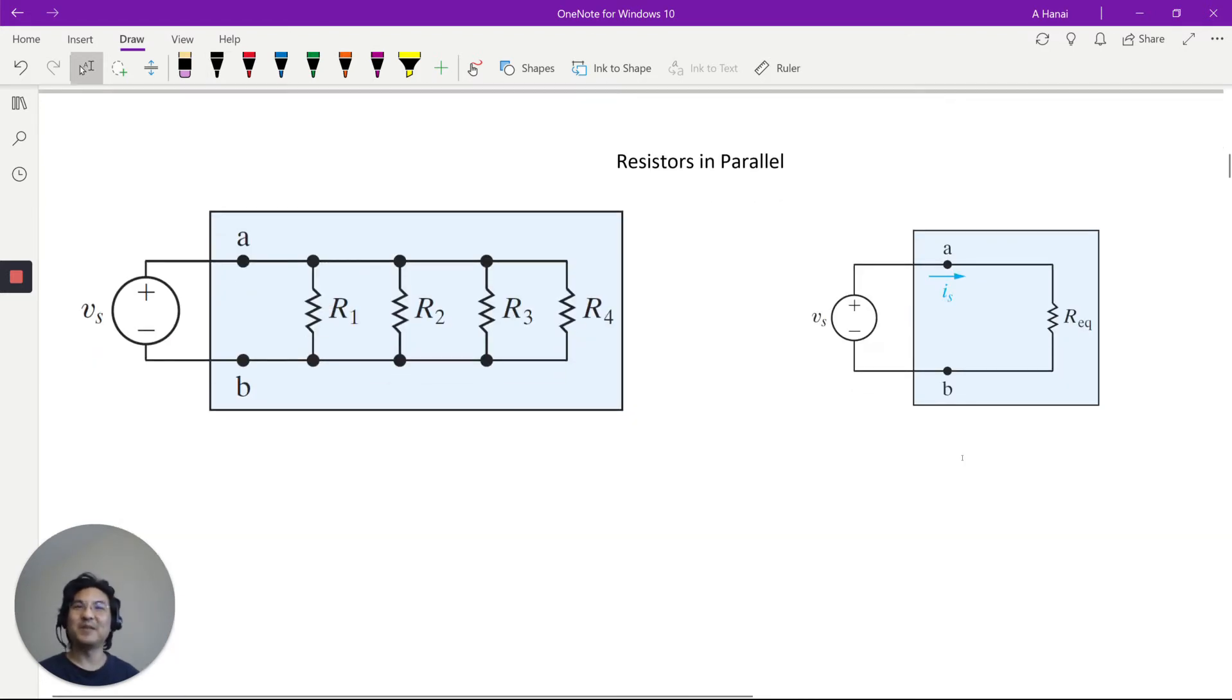Okay, now resistors in parallel, different arrangement. So they're hooked up in parallel. So already, this voltage is the same as this voltage, is the same as this voltage, right?